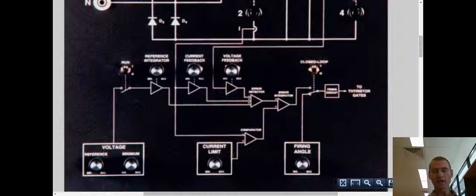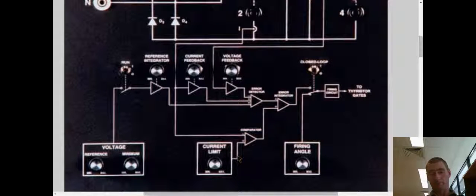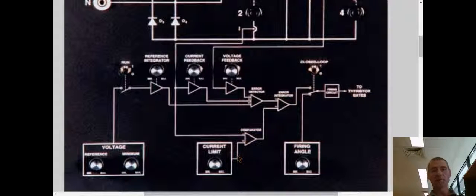This control down here, current limit, really limits the maximum amount of current that the control circuit will respond to. So for example, if the current limit is on minimum, then it's doing the minimum amount of current limiting.